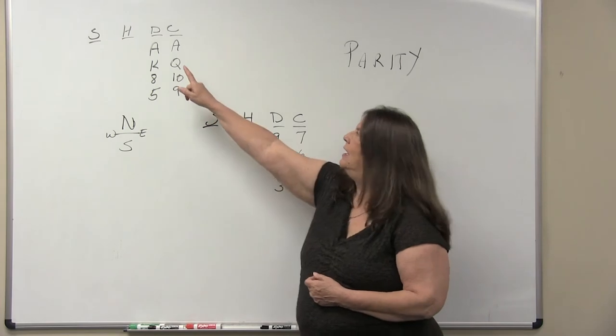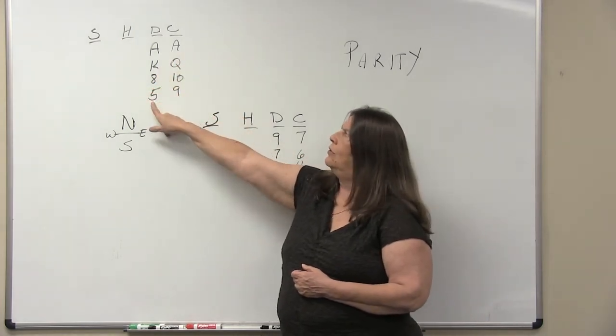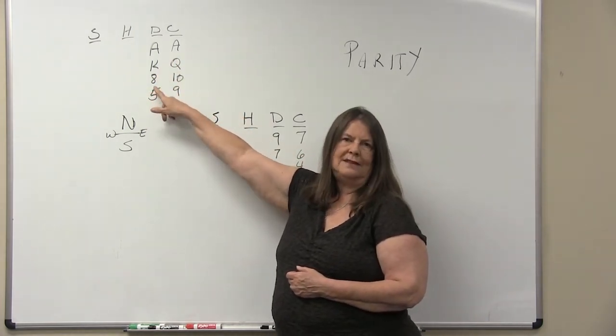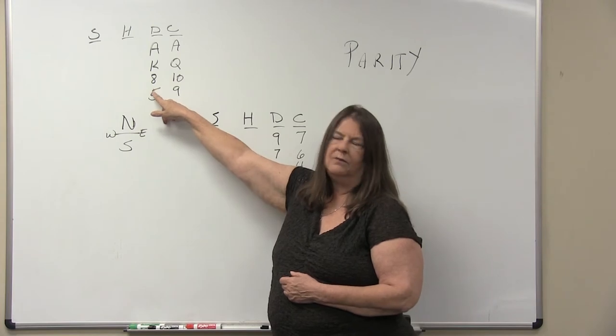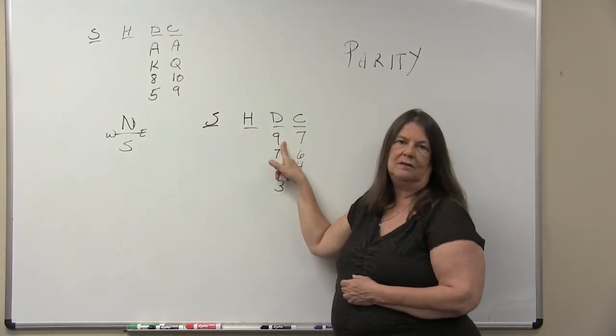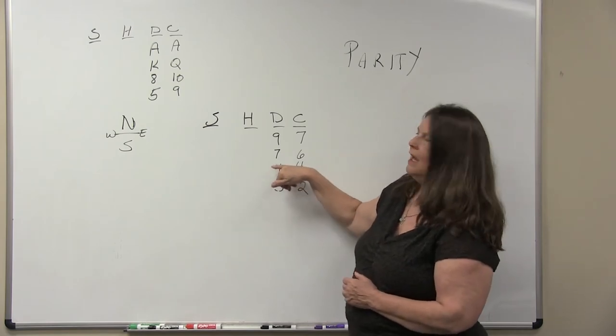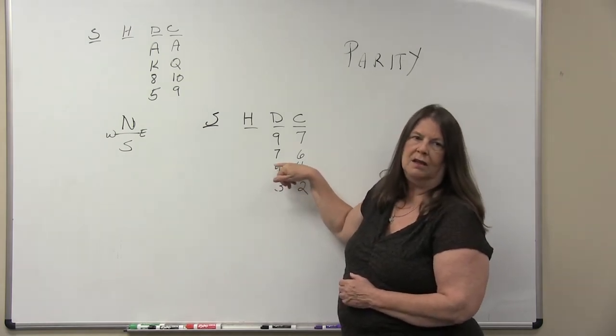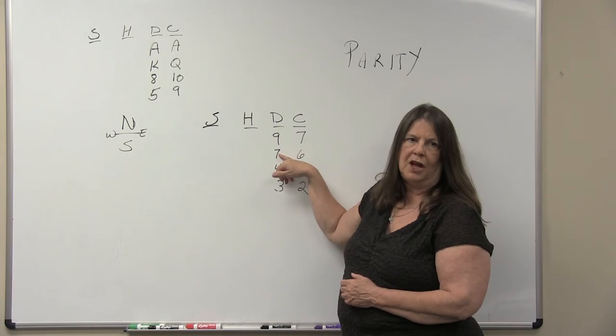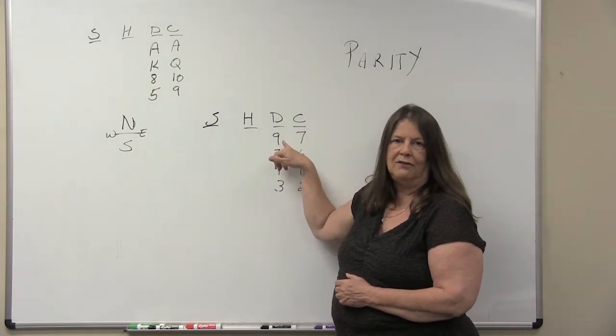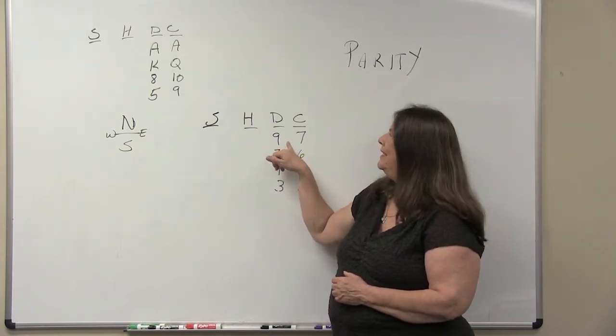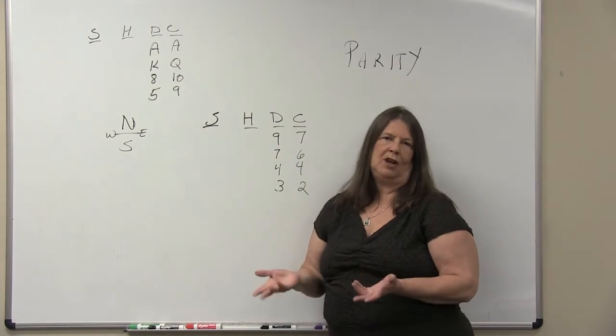So after the ace and king are played and the third diamond, the last diamond in dummy will be the eight. I have the nine and I also have four diamonds. So even though I play the three to the ace, the four to the king, the seven when it's played a third time small, I'll still have the nine left in my hand. My nine can keep the eight from becoming a winner.